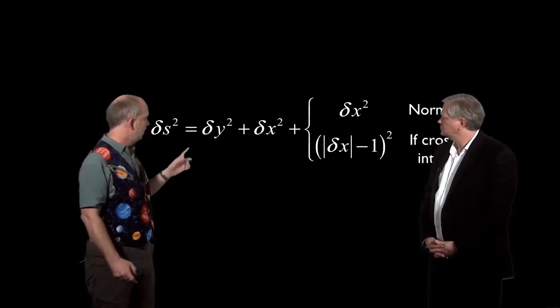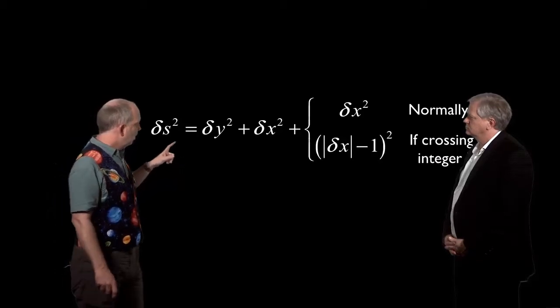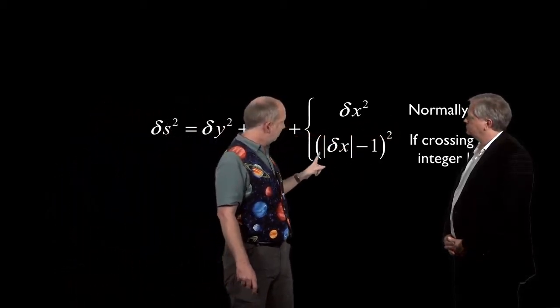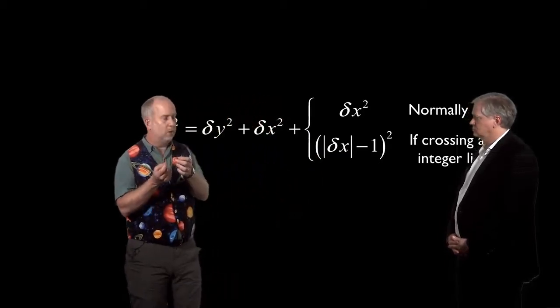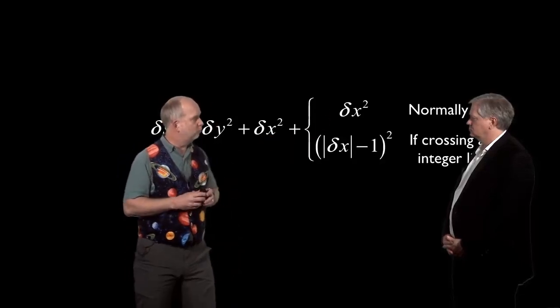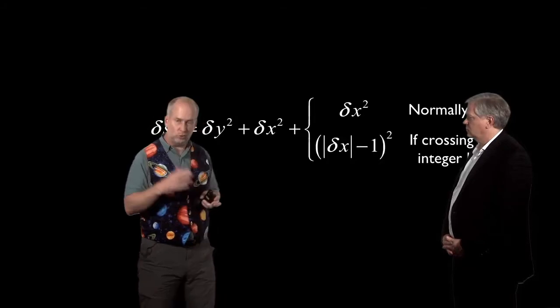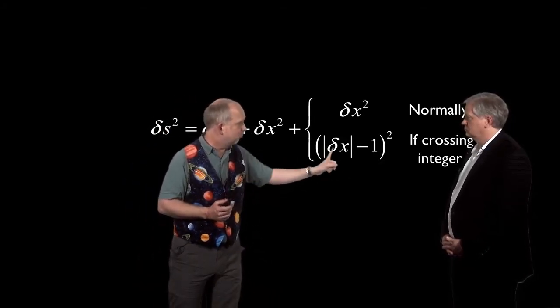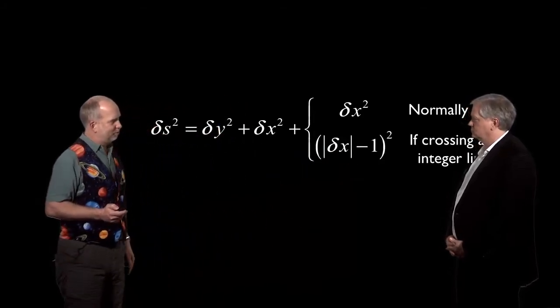So let's say we take the equation we had before, square it. But now, we're going to change it a little bit. Normally we have the normal thing. But let's say that delta x crosses an integer boundary. So if delta x is going from 1.3 to 1.4, just use this. But if it goes over an integer boundary, like 1.95 to 2.05, that's crossed an integer boundary, and let's use that instead. We take the modulus, take off one, and square it.